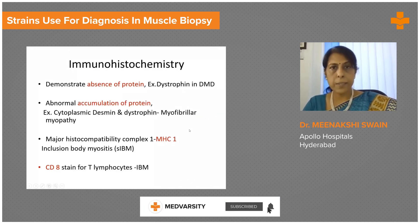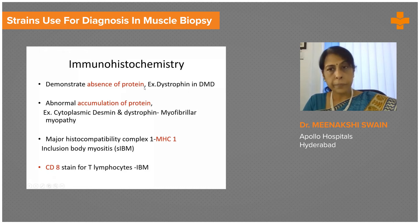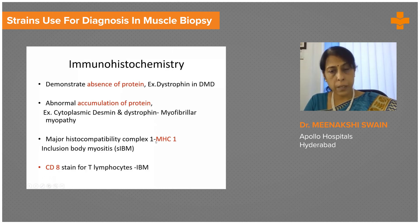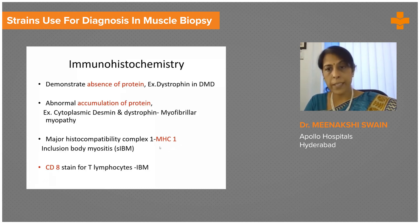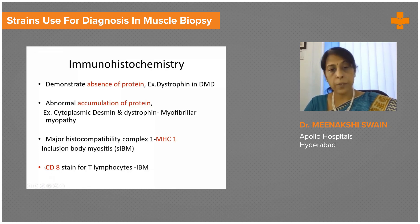Having looked at the basic enzyme stains, immunohistochemistry (IHC) — familiar especially in tumor diagnosis — also helps in muscle. It helps demonstrate absence of protein, such as absence of dystrophin in Duchenne muscular dystrophy, or abnormal accumulation of protein, as seen in myofibrillar myopathies where there is accumulation of cytoplasmic desmin and sometimes dystrophin. IHC for MHC class I is important: normal muscle lacks MHC1 staining, so if MHC1 shows staining, it indicates an inflammatory myopathy — a very important category since many of these diseases are treatable. CD8 and CD4 stains identify T lymphocyte types.